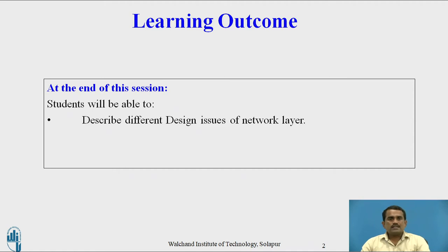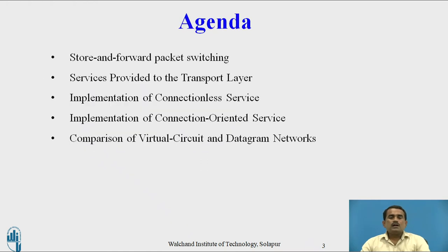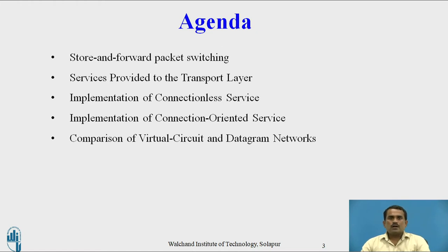Learning Outcome: At the end of the session, students will be able to describe the different design issues of the network layer. As we discussed in the previous video, there are a total of 5 design issues. In this video, we will discuss the next 3 points: implementation of connectionless services, implementation of connection-oriented services, and comparison of virtual circuit and datagram circuit.